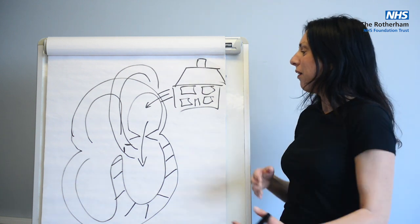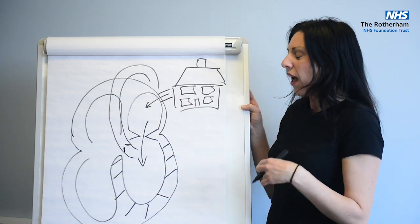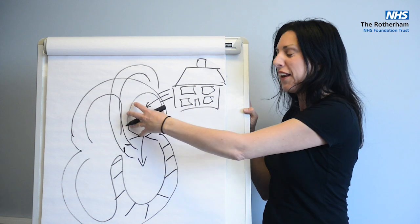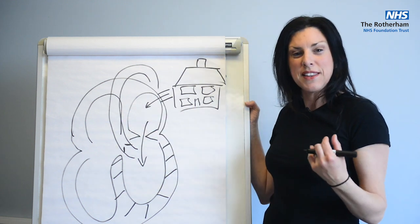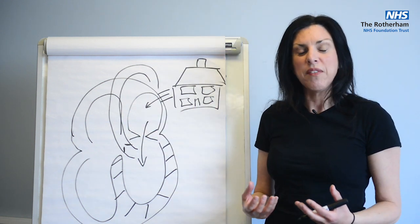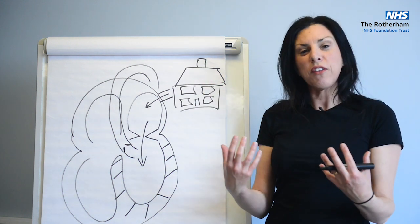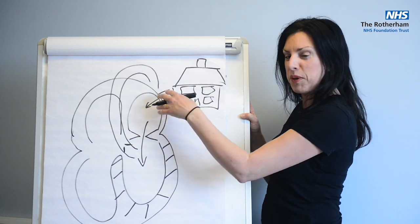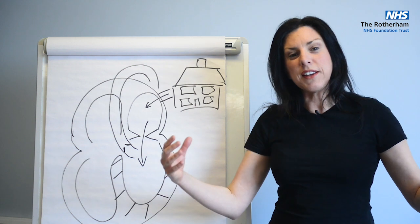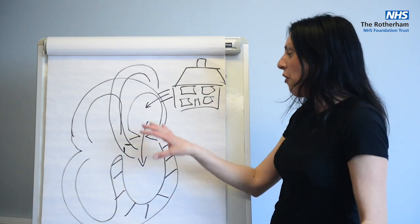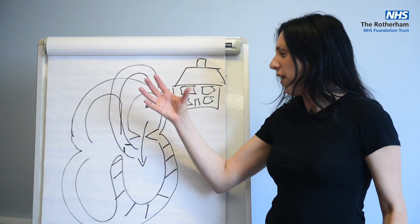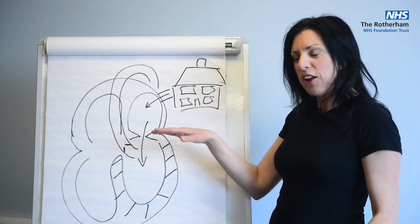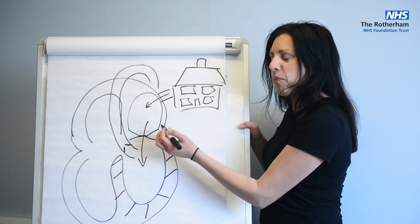Going back a little: the blood coming into the heart has already been to the lungs and picked up oxygen there. We breathe oxygen, it gets transferred into the blood, and then oxygen-rich blood travels through the chimney pot into the top room. It fills until it can fill no more, the trap door opens, blood falls into the bottom chamber and the rest is squeezed in. The door shuts to stop the blood going backwards — that's really important.